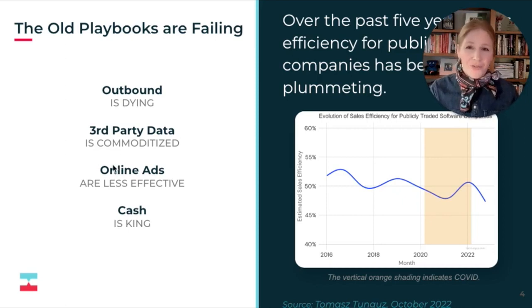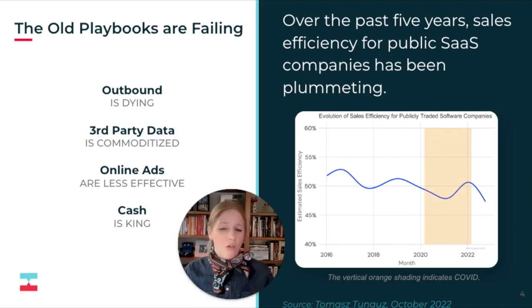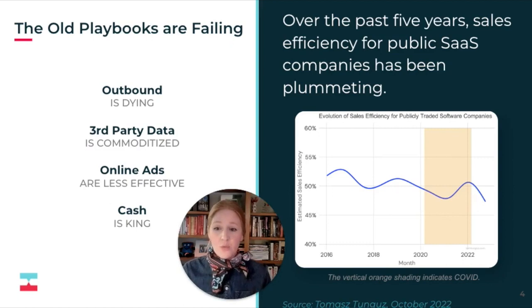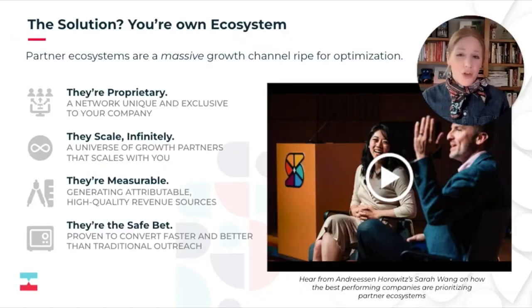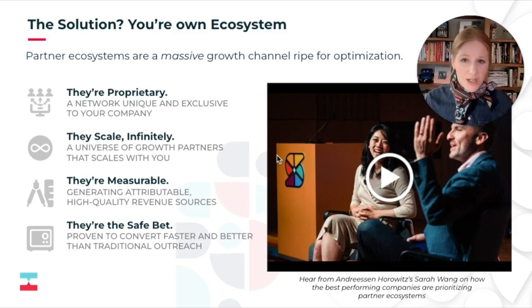Third-party data has gotten really commoditized with crowding and increased competition. Online ads are becoming less effective with the death of the cookie, and cash is king. All the while, as we've been monitoring performance data in tech and B2B SaaS, we've seen a decline in SaaS companies in terms of sales performance and efficiency. The good news is the solution may be closer than you think — your own ecosystem.